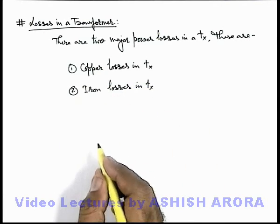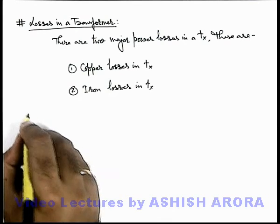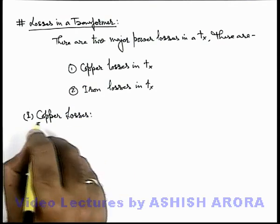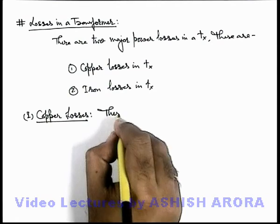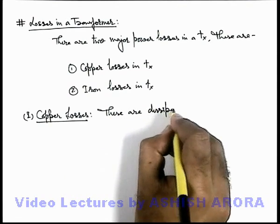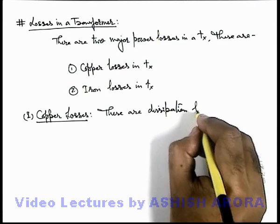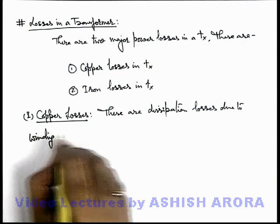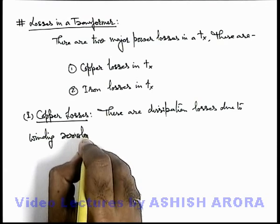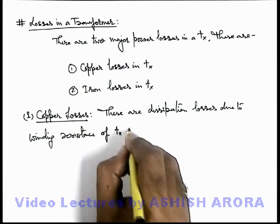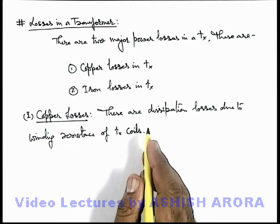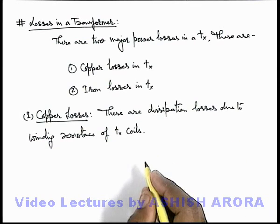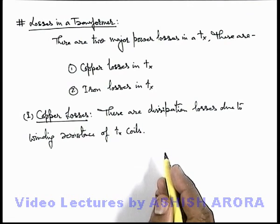Let's discuss both of these one by one in detail. If we talk about copper losses, these are dissipation losses due to winding resistance of transformer coils. The wires of which the transformer primary and secondary coils are made up of always have some joule heating effects because of their resistances, so some heat is dissipated in the coils.